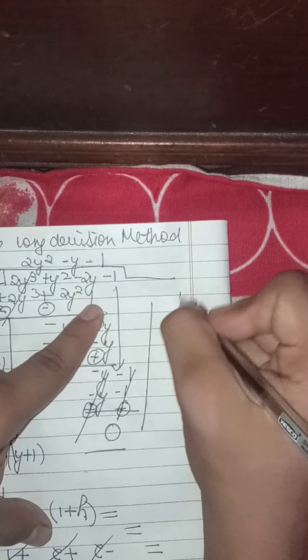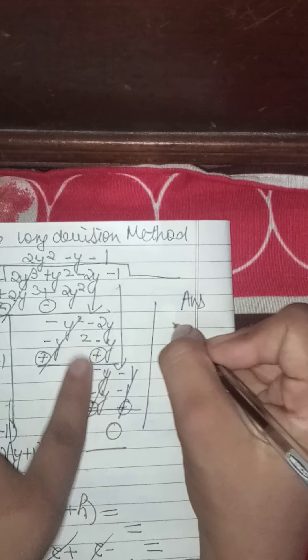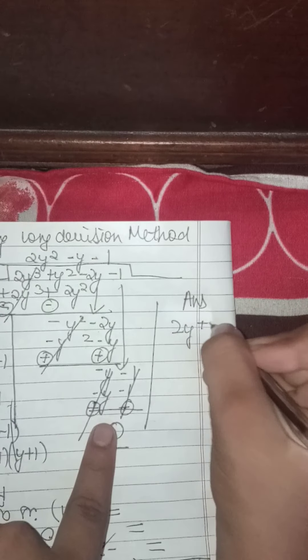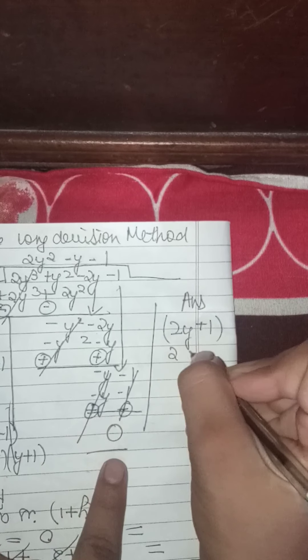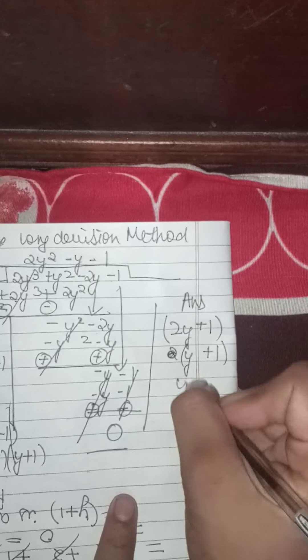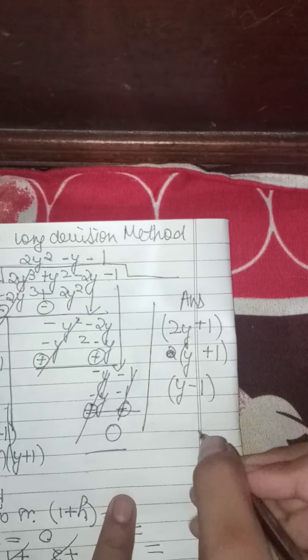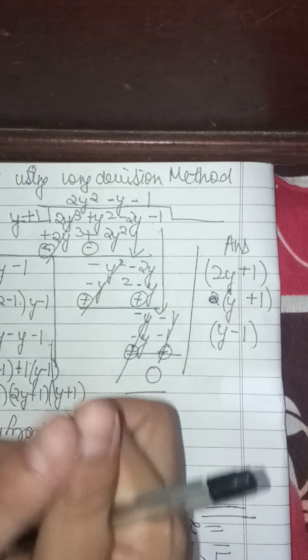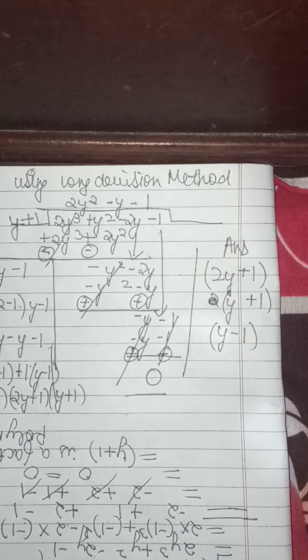Answer: 2y plus 1 first pair, y plus 1 second pair, y minus 1 third pair. If you like my video please like, share and comment to my YouTube channel. Thank you and have a nice day.